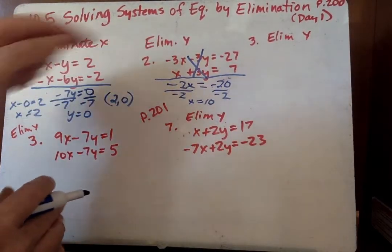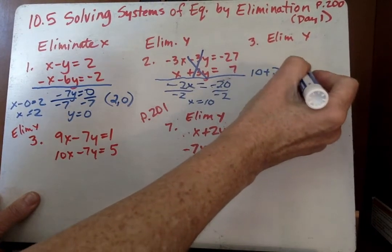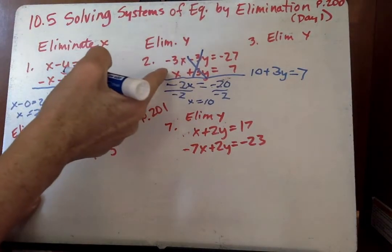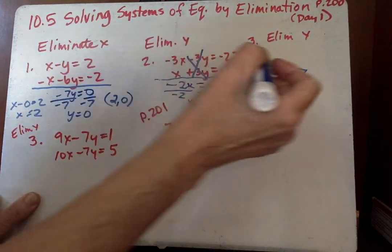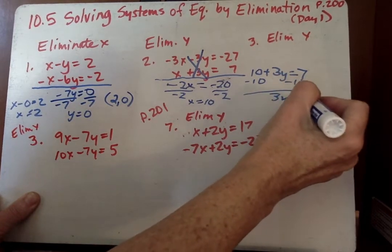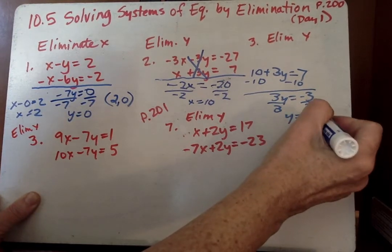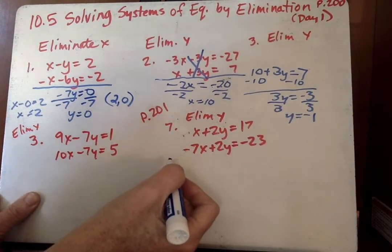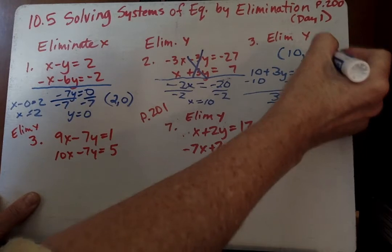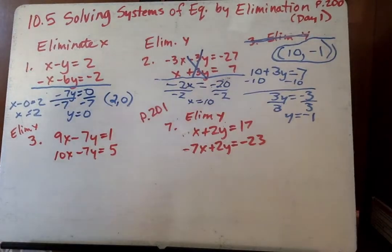Now we plug that into one of the equations, and we get 10 plus negative 3y equals 7. I went ahead and did this for number 2, for the second equation because it's easier. Then I'm going to go minus 10. Solve for y. 3y equals negative 3. Divide by 3, so y equals negative 1. So our solution is 10, negative 1. Again, you want to put it in ordered pair form, and there's your answer for number 2.